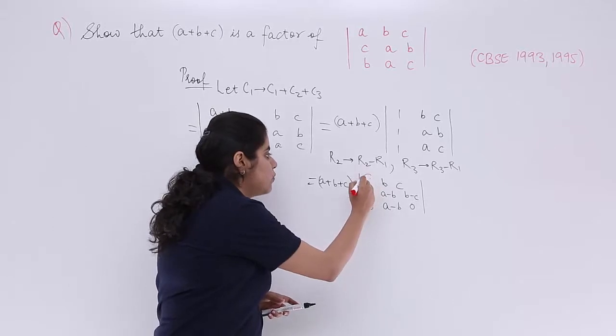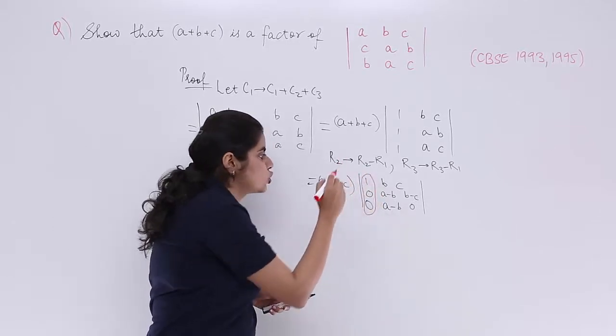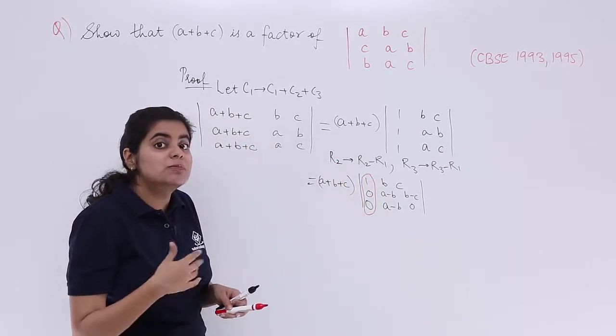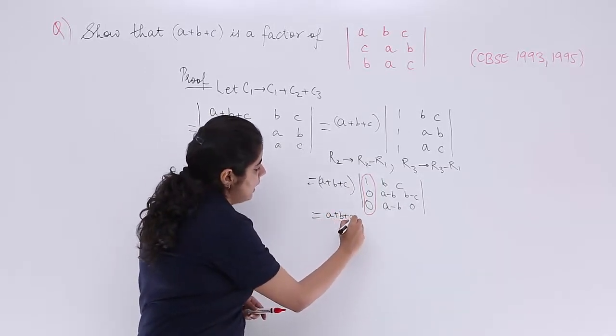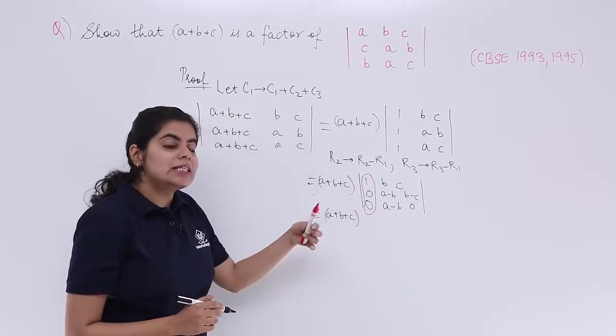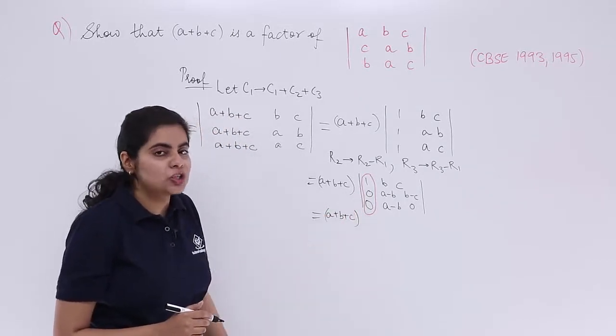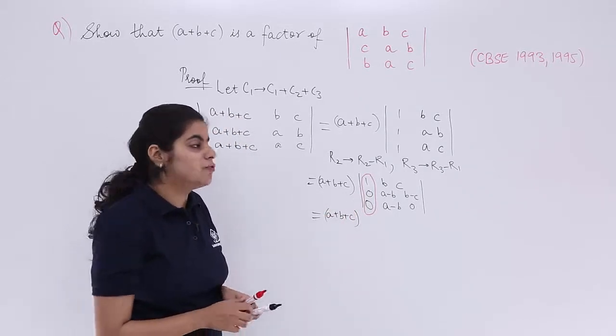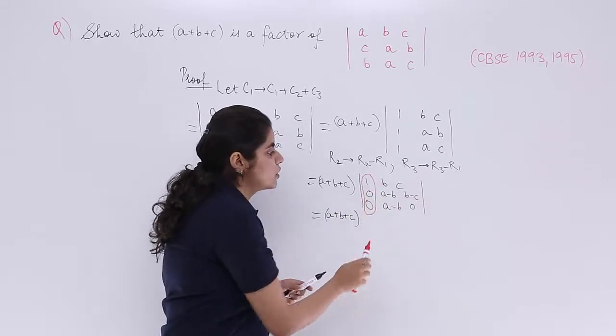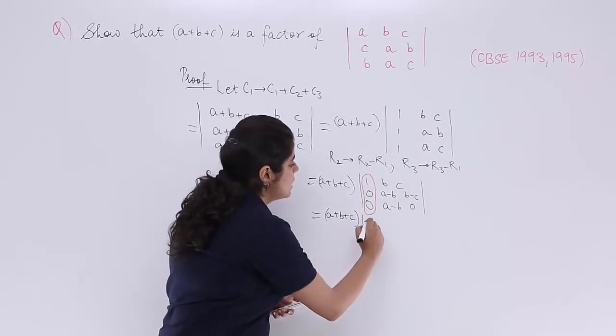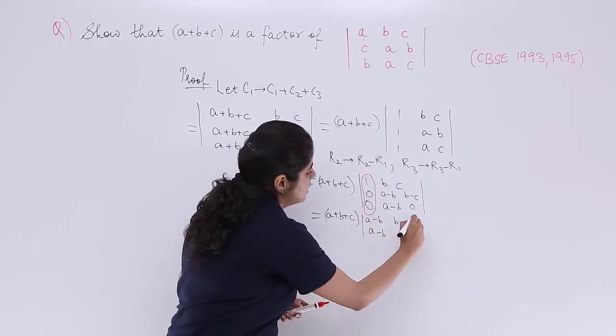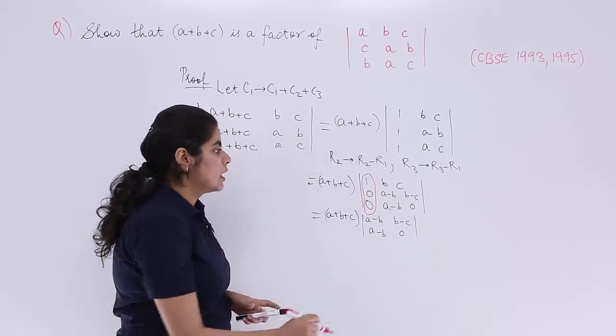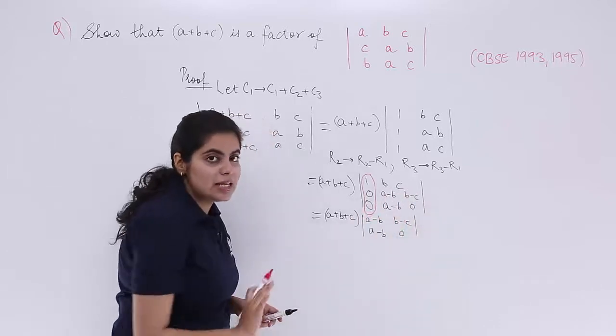If outside you see that first column has maximum number of zeros, it's better to evaluate from there. So I say that a plus b plus c is there. And now let's evaluate along the first column. If you evaluate along the first column, first row, first column has to be ignored. Inside you have a minus b, b minus c, a minus b and 0. That is what you see, right?